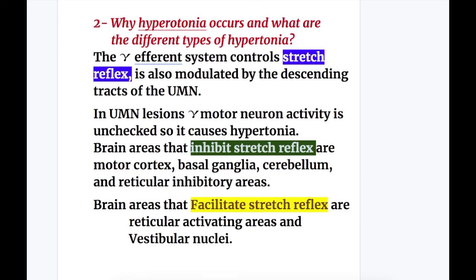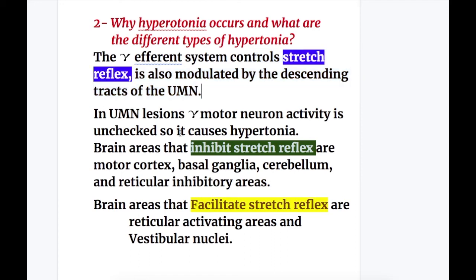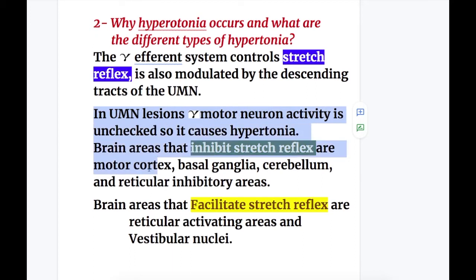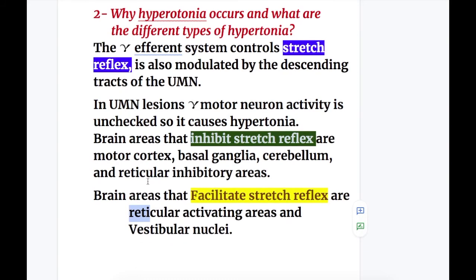Answer to question number two: why does hypertonia occur and what are the different types? The gamma efferent system controls stretch reflexes and is modulated by descending tracts of the upper motor neuron, but more by the extrapyramidal neurons. In upper motor neuron lesions, gamma motor neuron activity is unchecked, causing hypertonia. Brain areas that inhibit stretch reflexes are the motor cortex, basal ganglia, cerebellum, and reticular inhibitory area; facilitating areas are the reticular activating areas and vestibular nuclei.